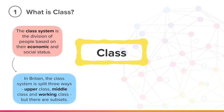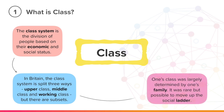In Britain, the class system is most easily split three ways: upper class, middle class, and working class, but there are subsets of these. At the time An Inspector Calls is set, one's class was largely determined by one's family. If you were born into a middle class family, for example, most probably you would remain middle class your entire life. It was rare but possible to move up the social ladder if, for example, you started a successful business and came into money.